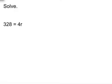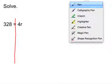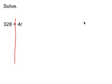This first one is 328 equals 4R. I'm going to draw that line down the middle. Our first step is always to find our variable. Our variable here is R, and I need to figure out how to get R isolated or by itself. The 4 is on the same side as R, so I'm going to write the 4 right below, but I have to balance — I'm going to put the 4 underneath on the other side too.